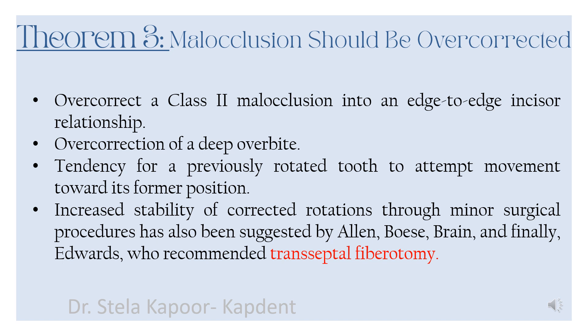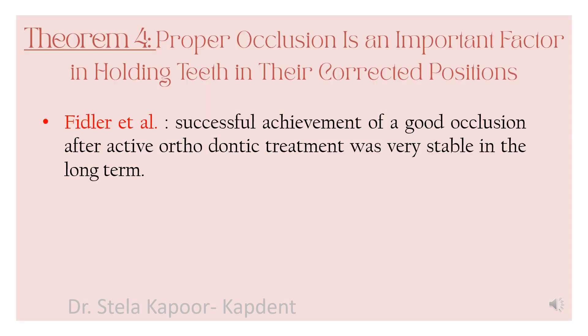According to the third theorem, malocclusion must be overcorrected. Overcorrecting your deep bite or your rotation compensates for the tendency of the teeth to relapse to their former position. Stability can also be further increased by minor surgical procedures such as transseptal fibrotomy. The fourth theorem is in line with the occlusal school of thought, according to which proper occlusion is an important factor in holding teeth in their corrected positions.